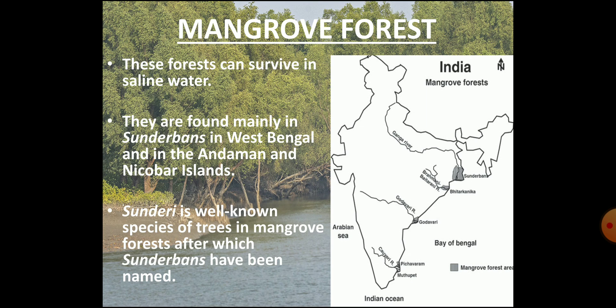The fifth type of vegetation is mangrove forests. They can survive in saline or salty water. They are found mainly in the Sundarbans in West Bengal, Pichavaram in Tamil Nadu, near Chilika in Odisha and in the Andaman and Nicobar Islands. The Sundari tree is a common species of mangrove forests and the Sundarbans are named after this Sundari tree.